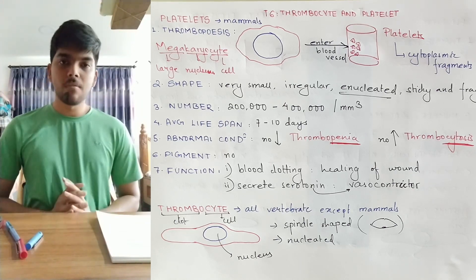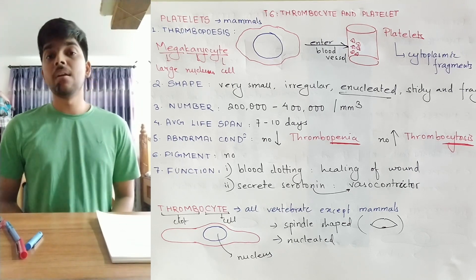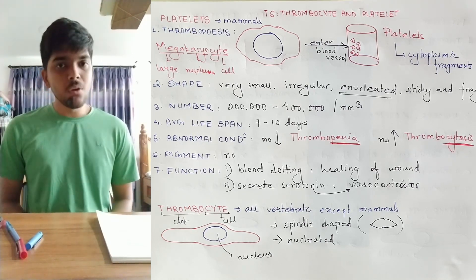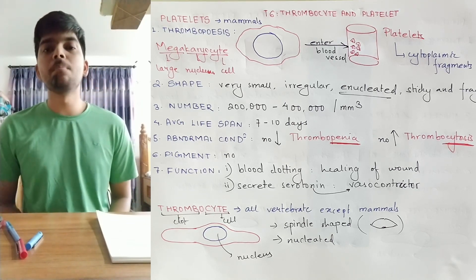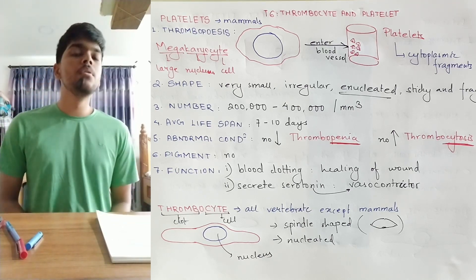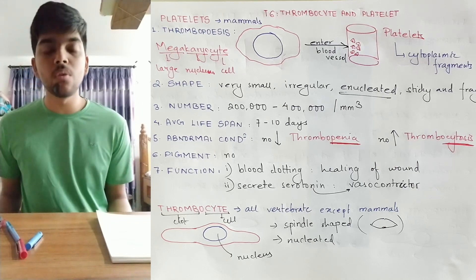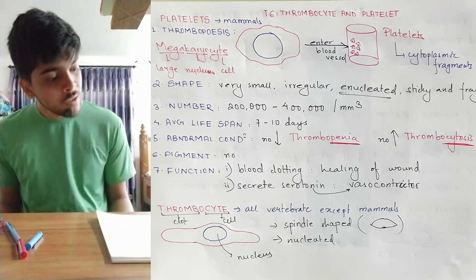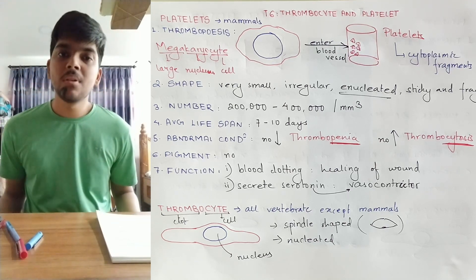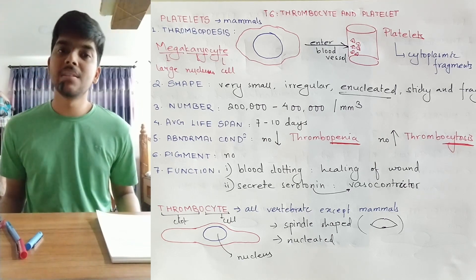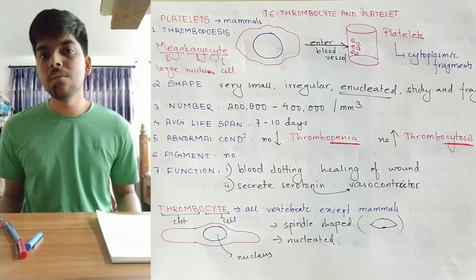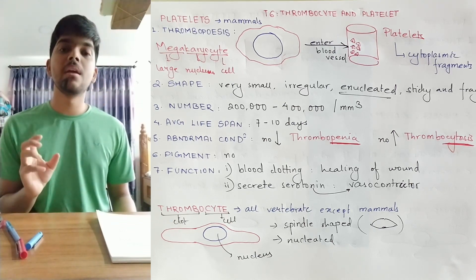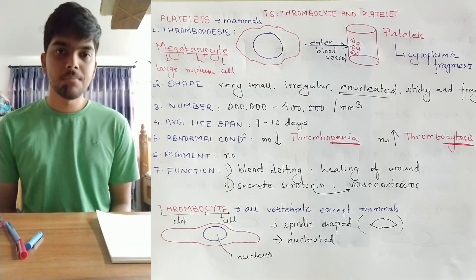To revise: platelets are found in mammals and help in blood clotting. The process of platelet formation is thrombopoiesis, and they form from megakaryocytes. They are small, irregular, enucleated, sticky, and fragile cytoplasmic fragments. Thrombopenia means platelet count below normal; thrombocytosis means above normal. Functions include blood clotting and secretion of serotonin. Thrombocytes, on the other hand, are nucleated clotting cells found in all vertebrates except mammals, with a definite spindle shape.